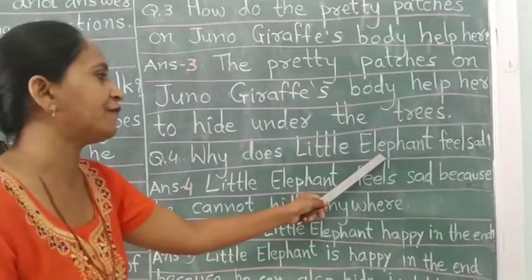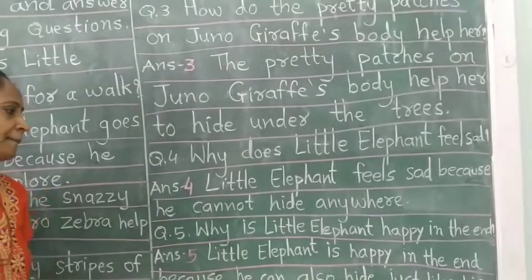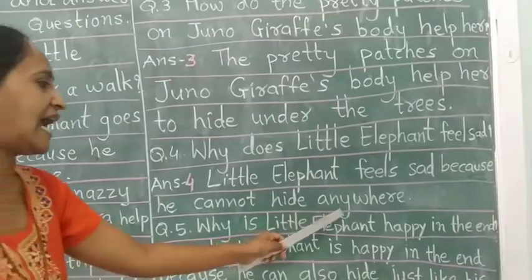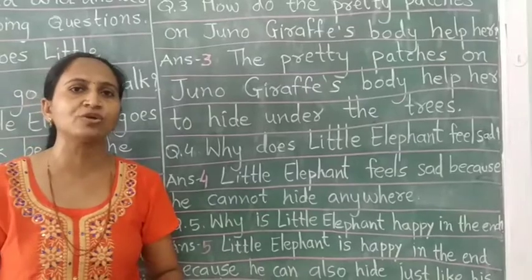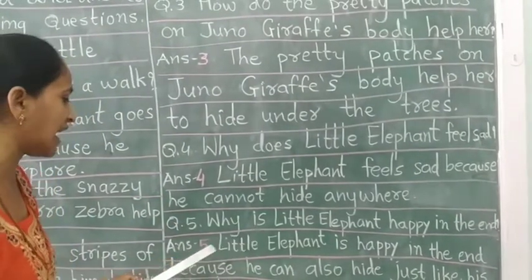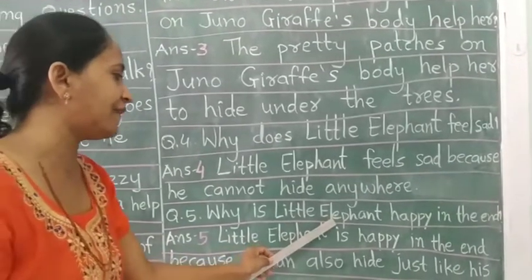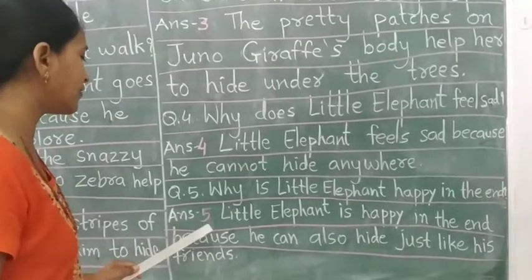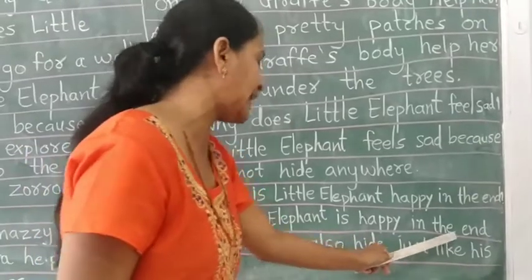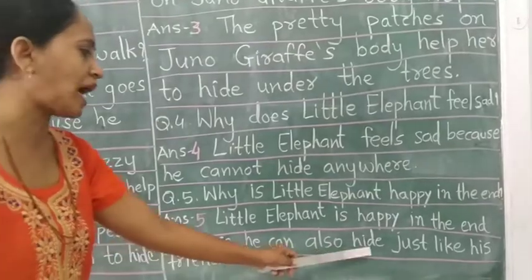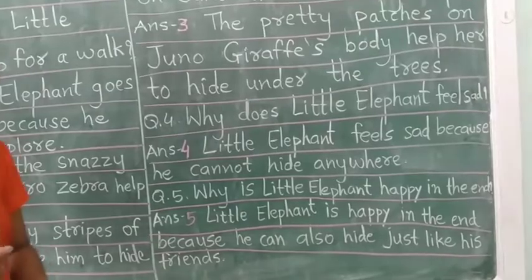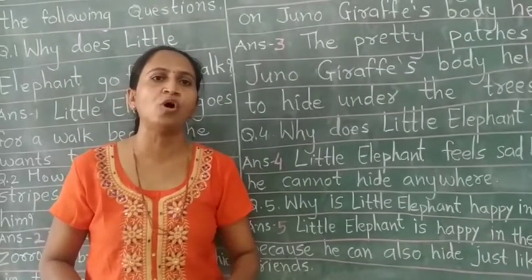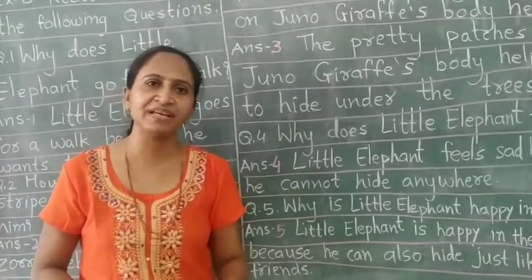Question four: why does little elephant feel sad? Little elephant sad क्यों feel करता था? Answer four: little elephant feels sad because he cannot hide anywhere। Question five: why is little elephant happy in the end? Answer five: little elephant is happy in the end because he can also hide just like his friends — क्योंकि वो भी अपने friends की तरह छुप सकता था, जैसे Zuno giraffe और Zoro zebra छुप जाते थे।